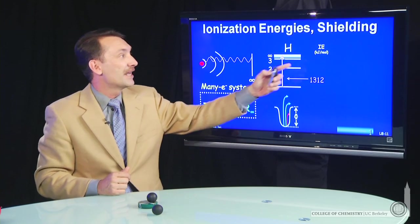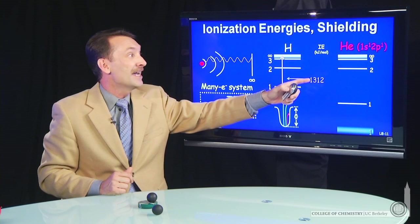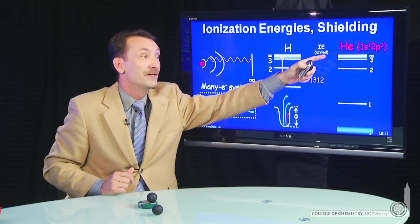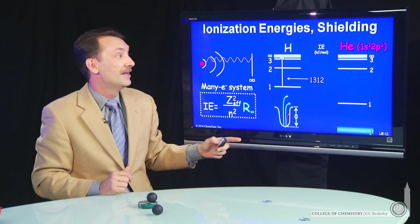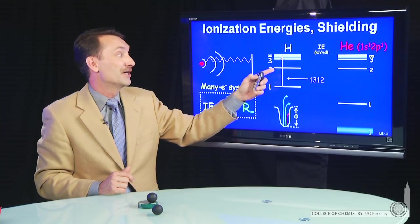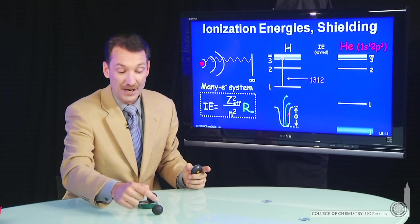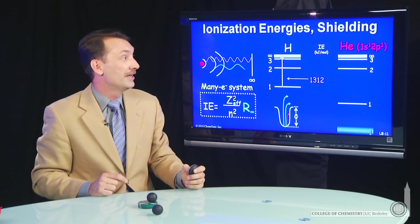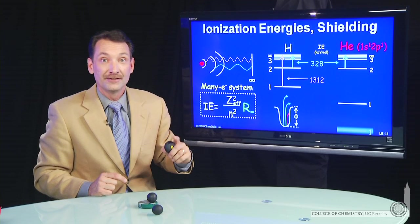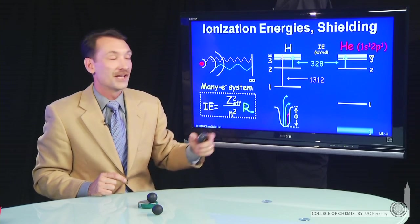So when you look at helium in the excited state, 1s1, 2p1, now that ionization energy from the n equals 2 state, how do I ionize that electron, is identical virtually to hydrogen in the 2 state.